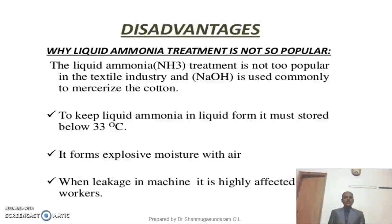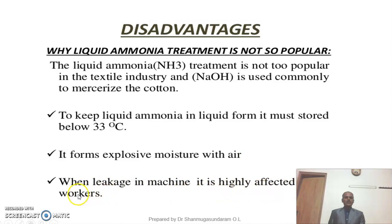Now we will discuss the disadvantages of ammonia treatment and why it is not so popular in the textile industry. The main reasons are: in order to keep liquid ammonia in liquid form, it must be stored below 33 degrees Celsius, which is very difficult to maintain during the storage period. It forms explosive mixtures with air. Similarly, when leakage takes place during the mercerization process, it is highly hazardous to workers. These are the three main reasons why ammonia treatment is not widely used in the textile industry for mercerization of cotton material.